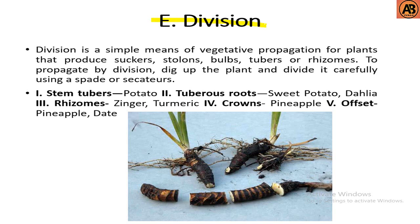Next is division, another type of asexual propagation. Division is a simple means of vegetative propagation for plants that produce suckers, stolons, buds, tubers, or rhizomes. To propagate by division, dig up the plant and divide it carefully using a spade or shears. Division may be classified into stem tubers, tuberous roots, rhizomes, crowns, and offsets. Examples: stem tubers — potato; tuberous roots — sweet potato, dahlia; rhizomes — ginger, turmeric; crowns and offsets — pineapple. Here in the picture you can see different types of division that may grow into new plants.